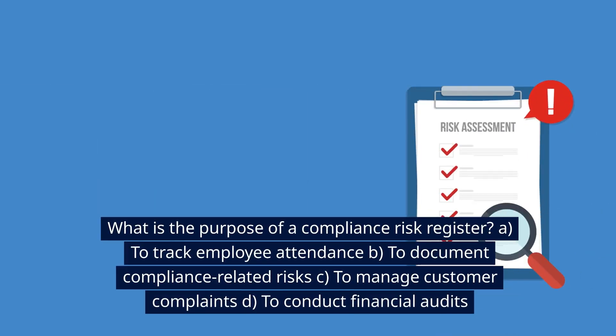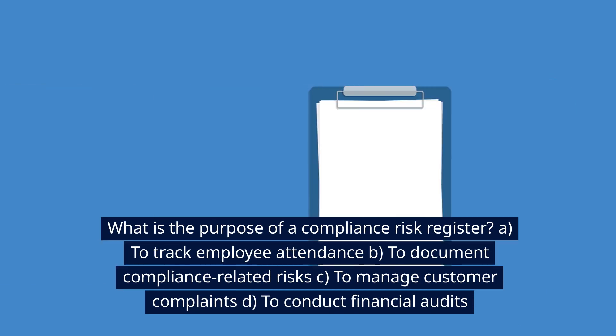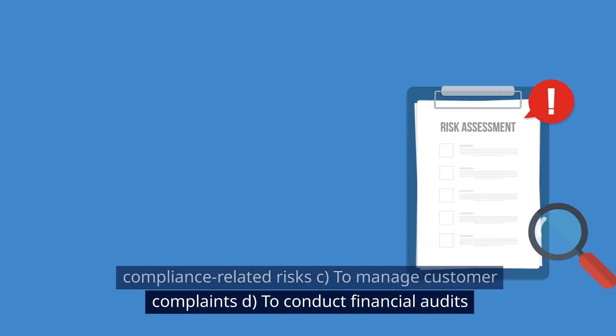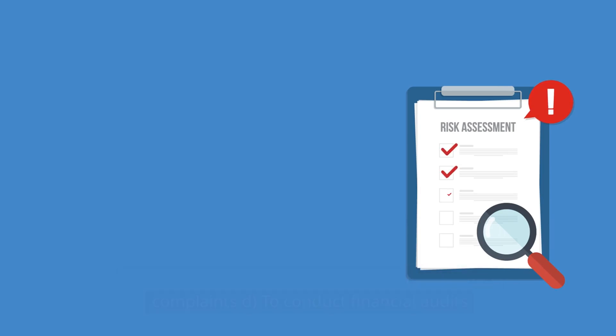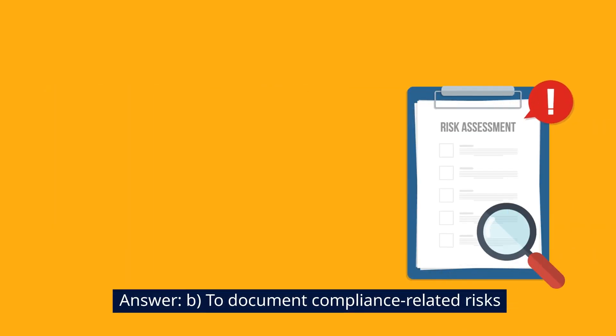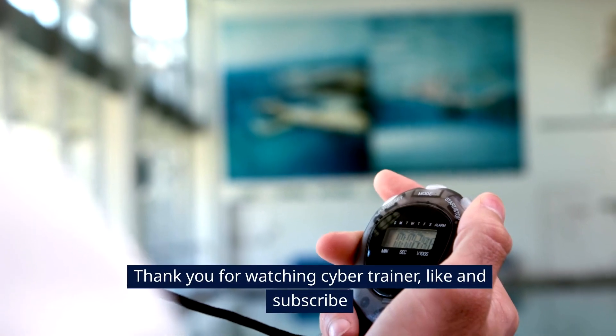What is the purpose of a compliance risk register? A. To track employee attendance. B. To document compliance-related risks. C. To manage customer complaints. D. To conduct financial audits. Answer: B. To document compliance-related risks.